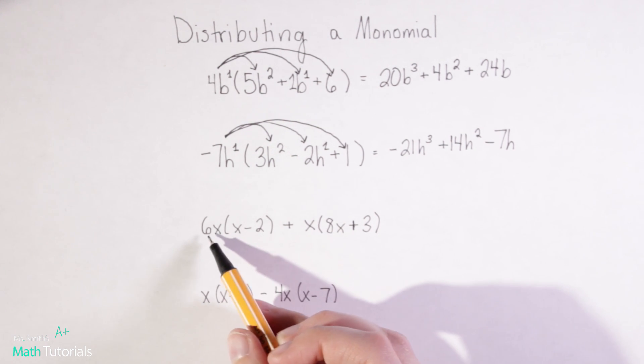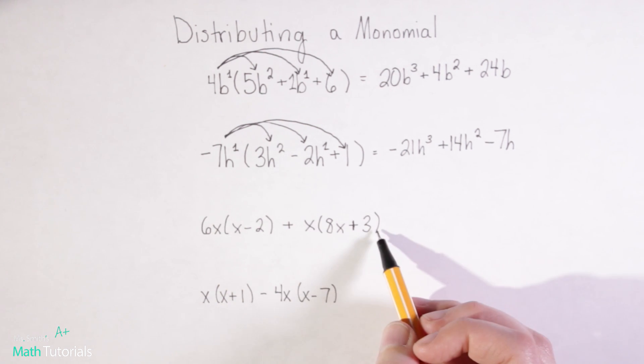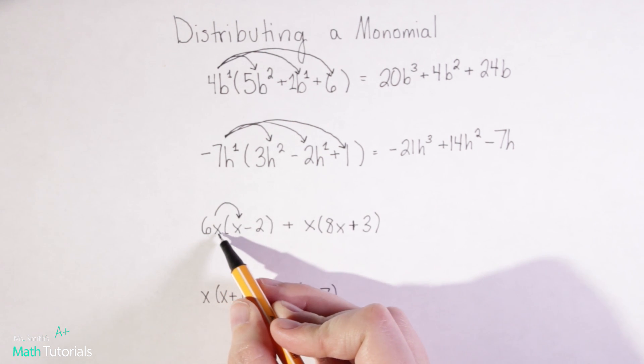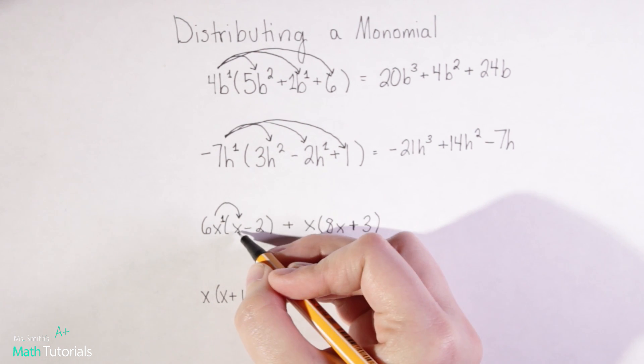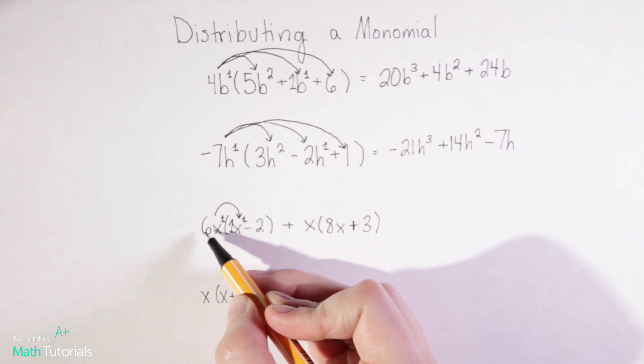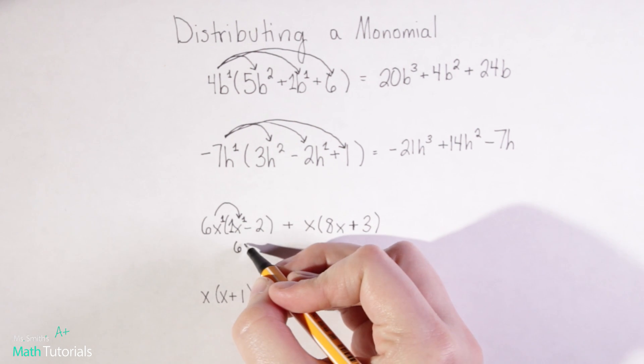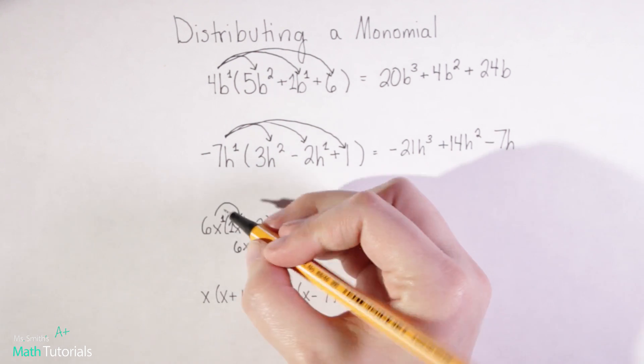Now in this problem you'll notice we've got a monomial being distributed in, a monomial being distributed in, and then we're going to have to combine some like terms. So let's just take it one at a time. I'm going to start with distributing the 6x, and that's to the understood first power, times x to the understood first power that's also got a 1 in front of it. So 6 times 1 would be 6. X times x, we add our exponents so it's actually x squared.